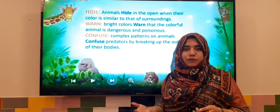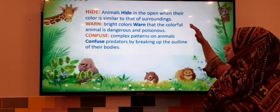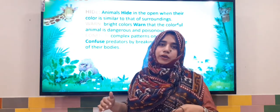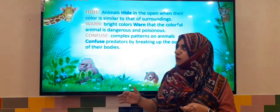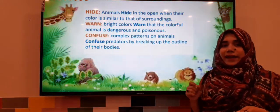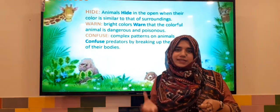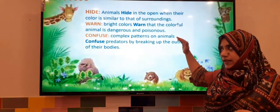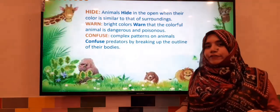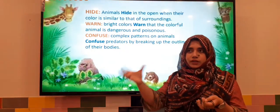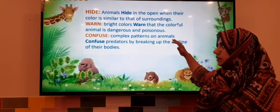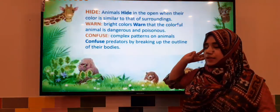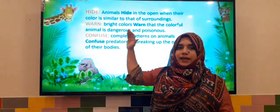Animals hide in the open when their color is similar to that of their surroundings. Another concept is 'want' — bright colors, like the patterns of snakes, signal that a colorful animal is dangerous and poisonous. The third is 'confuse' — complex patterns on animals confuse predators by breaking up the outline of their bodies. So remember those three words: hide, want, and confuse.